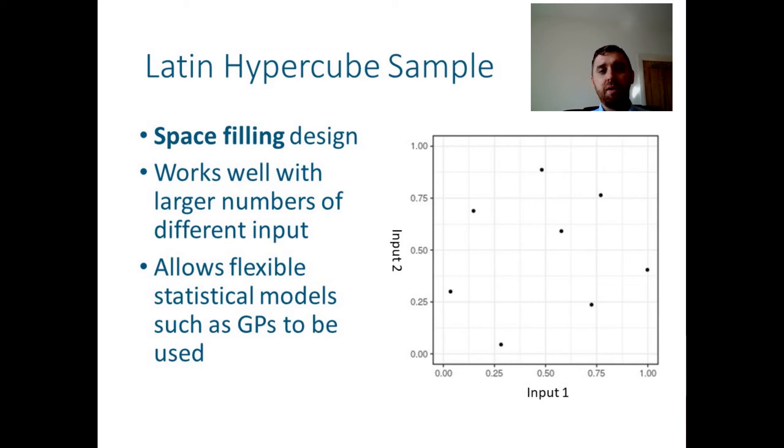In contrast, a Latin hypercube design divides each input axis into a number of sections and then places points to ensure that there's at least one design point in every section. Latin hypercubes provide good designs for experiments with agent-based models because they can be made to be space-filling, so that all areas of the parameter space are explored.